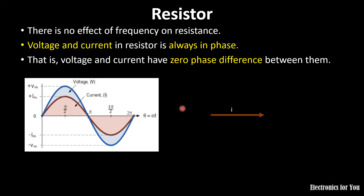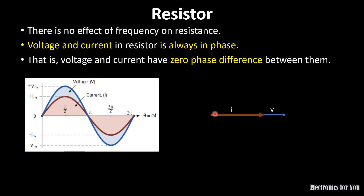Here the current and voltage are in phase — there is no phase difference — so voltage and current will overlap in the phasor diagram. This is the voltage across the resistance and this is the current flowing through the resistance.